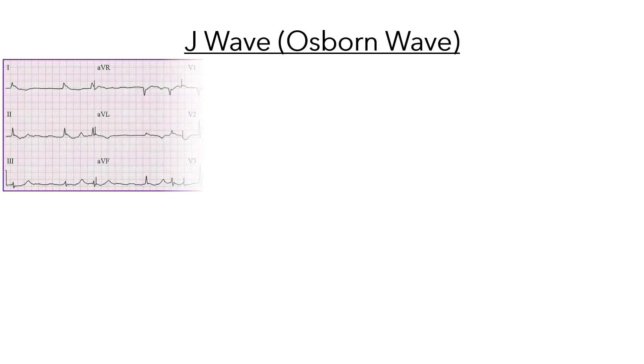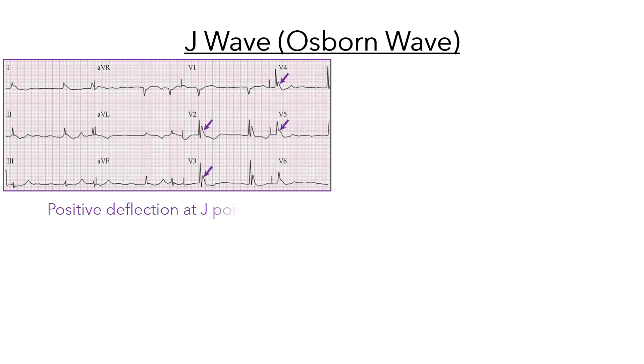J wave, also known as Osborne wave, is a positive deflection observed at the J point, which is the junction of the QRS complex and the ST segment in precordial and true limb leads.